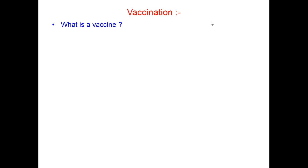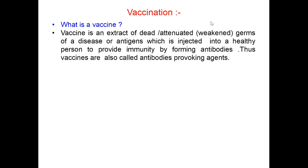Let us have some introduction of vaccine. First of all, what is a vaccine? A vaccine is an extract of dead, attenuated or weakened germs of a disease or antigen which is introduced into a healthy person to provide immunity by forming antibodies. Thus the vaccines are also called antibody-provoking agents.